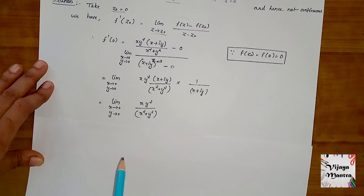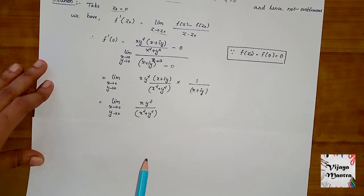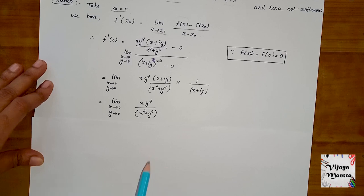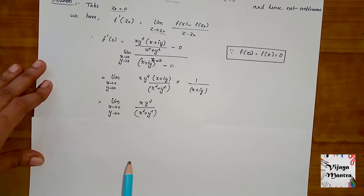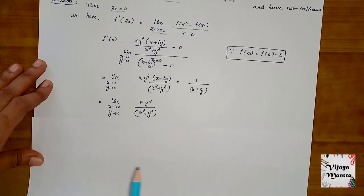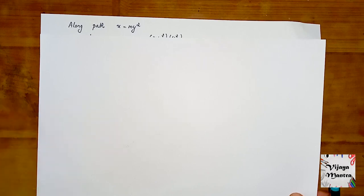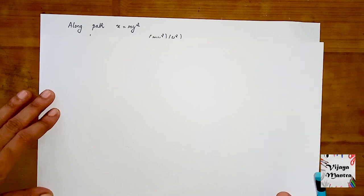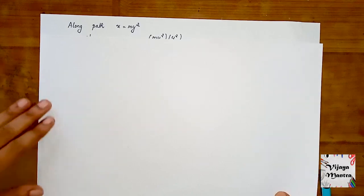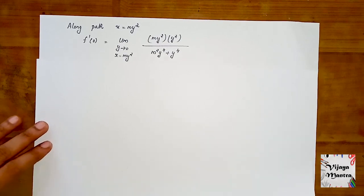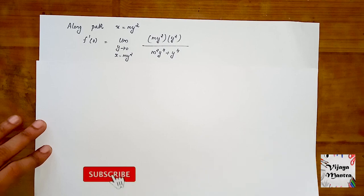Now let's look at the possibilities. We need to choose different paths to check if we get the same limit. We can choose y = mx, or if you want to see the cancellation, you can choose x = my².